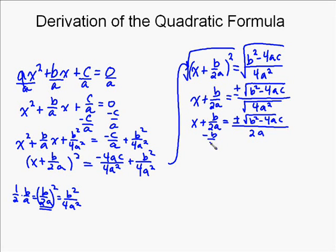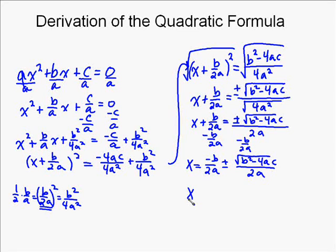And then now we want to get the x by itself, so we're going to subtract b/2a from both sides. Okay, and that's going to leave you with, well, just to be like the formula, it's going to be negative b/2a plus or minus square root of b squared minus 4ac all over 2a. Now those two can be added together because they have the same denominator, the denominator of 2a.